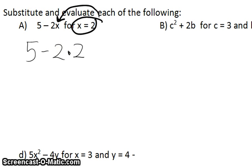So that means multiplication even though there's no multiplication sign. So I needed to put it here. If I didn't, it would look like 5 minus 22, which is not what we want to say. So I substituted. Now I need to evaluate. In evaluating, I'm going to use my order of operations, which means I need to multiply first. So this gives me 4. And so now I have 5 minus 4, which is 1. And that's my final answer.